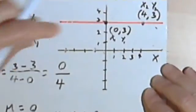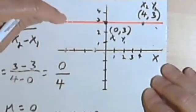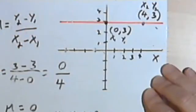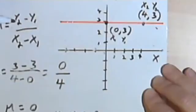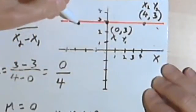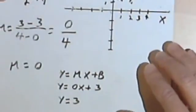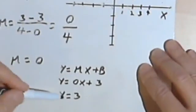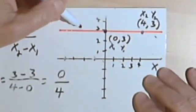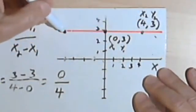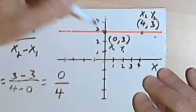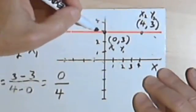And that makes sense, because looking at this line, everywhere on this line, the y equals 3. So if you have a horizontal line, the slope of a horizontal line is 0. The equation for the horizontal line will be y equals and then what number that y always is. And you can just look at the y-intercept to find out what that number is. In this case, it's the 3.